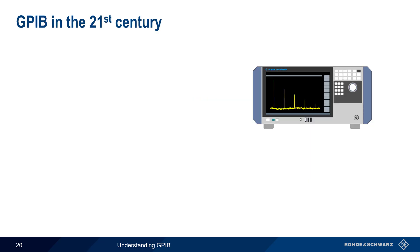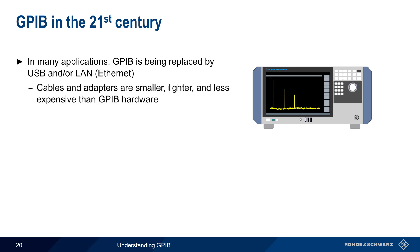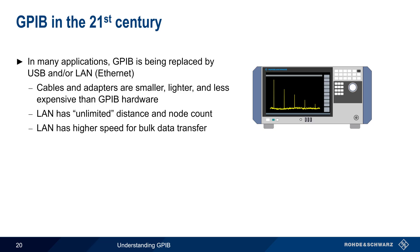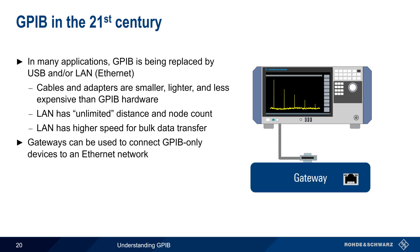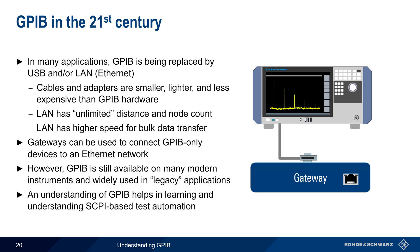Although GPIB has been widely used for decades, it has been replaced by USB or Ethernet in many applications. There are several reasons for this, including the smaller size, lighter weight, and lower cost of these technologies compared to GPIB. Using a LAN connection also removes some of the limitations of GPIB in terms of distance and node count, and provides better performance when transferring large amounts of measurement data. Instruments having only a GPIB interface can be connected to an Ethernet-based automation network using special gateways. That said, many current test and measurement instruments still provide a standard or optional GPIB interface, and a basic understanding of GPIB also provides a good foundation for learning SCPI-based automation over non-GPIB interfaces as well.